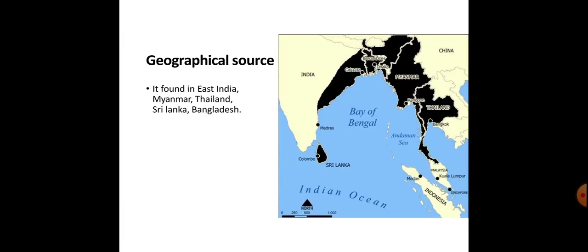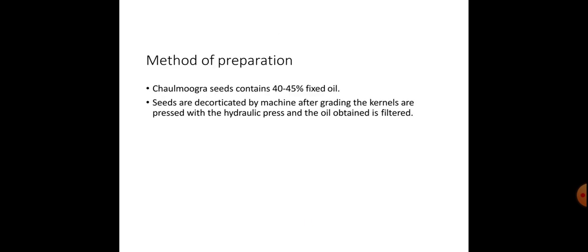Geographical source. It is found in East India, Myanmar, Thailand, Sri Lanka and Bangladesh. Method of preparation: Chaulmoogra seeds contain 40 to 45% fixed oil. Seeds are decorticated, pressed and ground by machine; the kernels are pressed with a hydraulic press and the oil obtained is filtered.